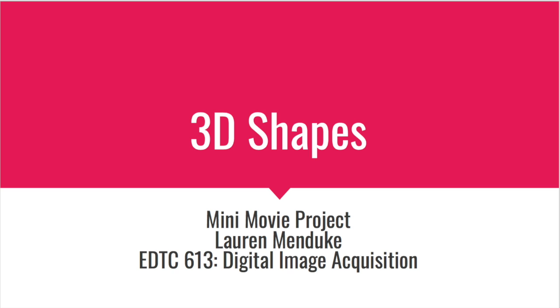Today we are going to learn about 3D shapes. The difference between a 3D shape and a 2D shape is that a 2D shape is flat, like a square, a circle, a triangle. You can simply draw it on a piece of paper.